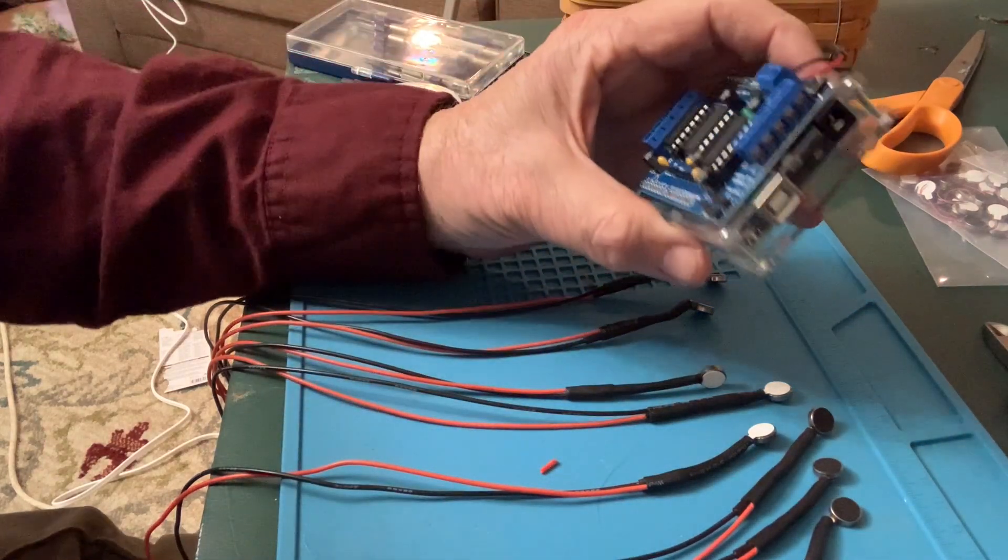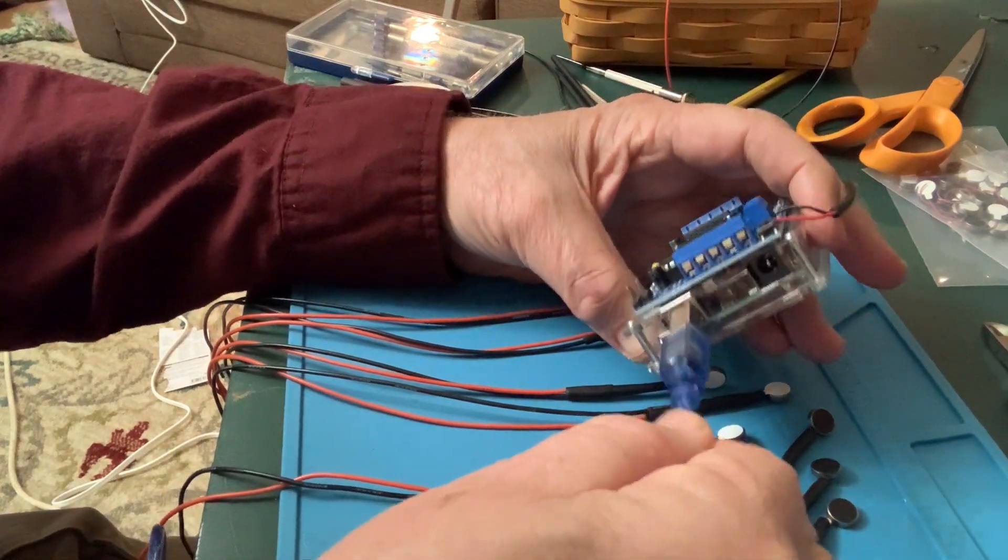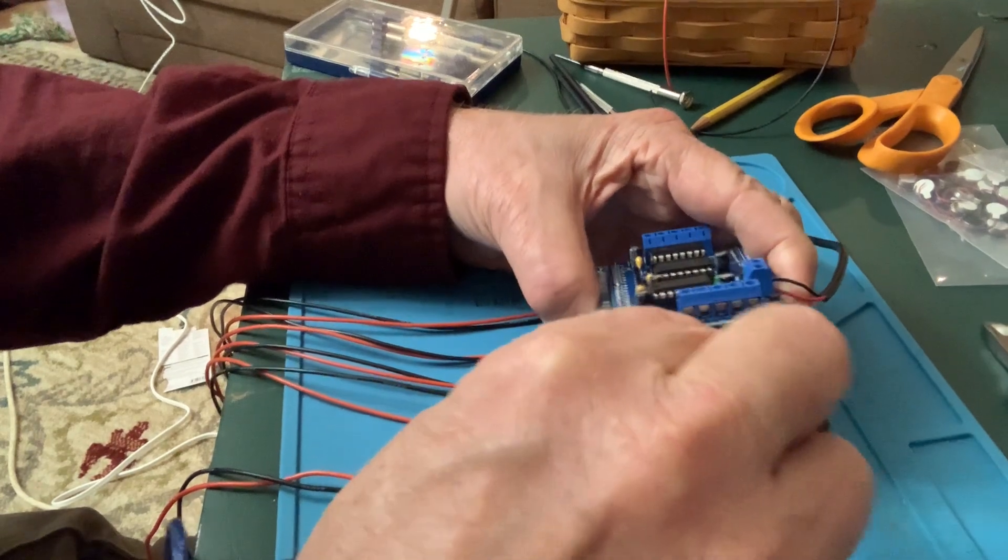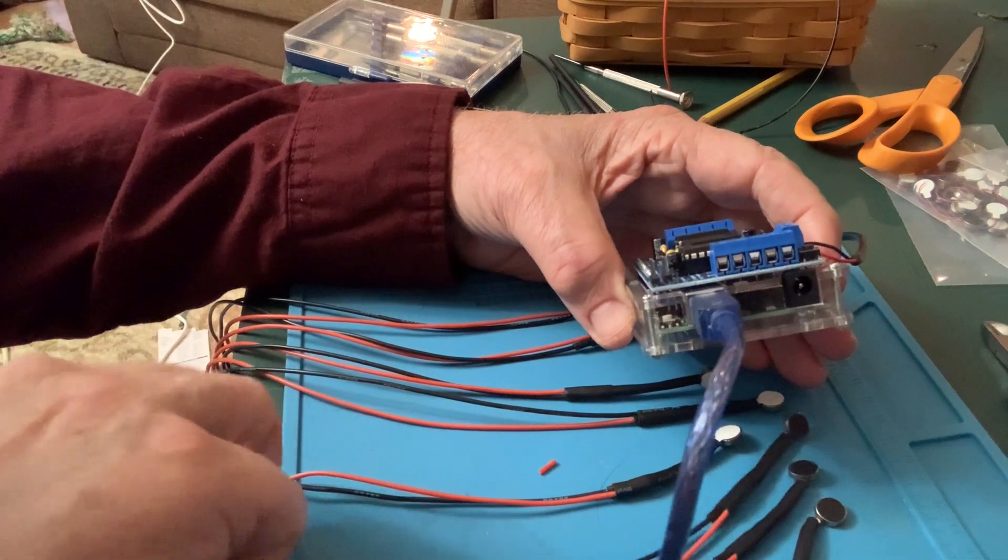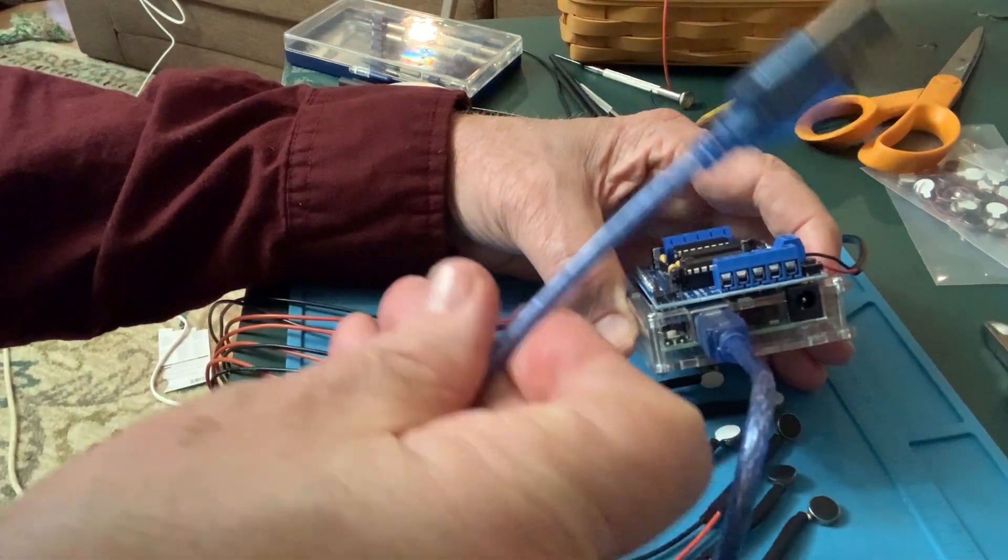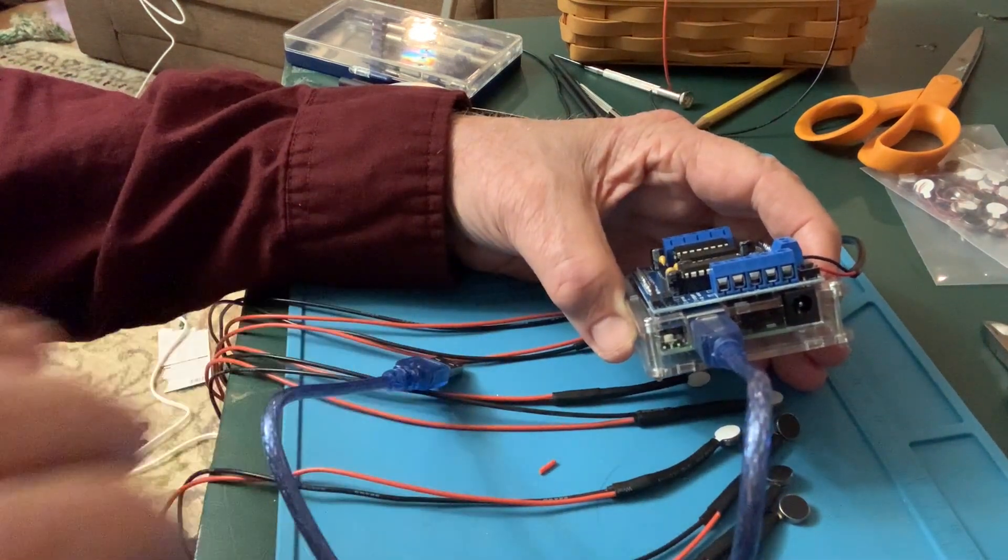So we're going to take our Arduino and the cable, and we're going to plug the cable in. Just slides in like you were plugging in a printer. And now we are going to go over to a computer and download the files that we need. We are not going to plug in the USB until we have the software installed on the computer. So let's go.